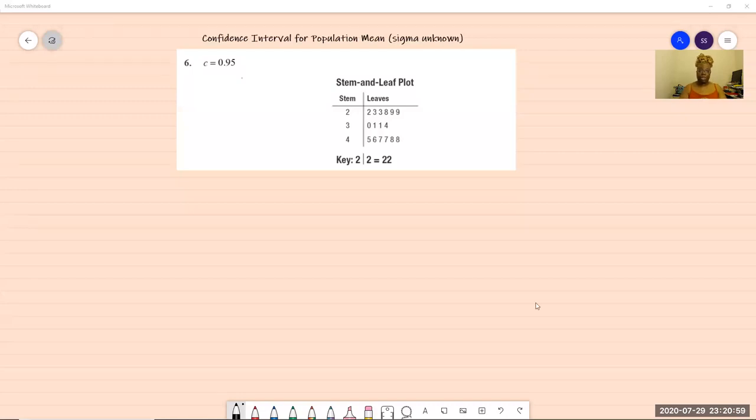So today we're doing statistics and we're going to be talking about getting a confidence interval. And then we're going to discuss what type of confidence interval we're going to be getting. So let's jump right into it and I'm going to share my screen so we can get on to it.